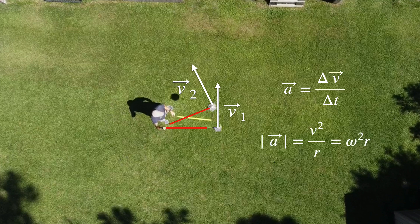You can determine the magnitude of this acceleration as v squared over r, where r is the radius of the circle. You could also write this in terms of angular velocity as omega squared times r. That's important.